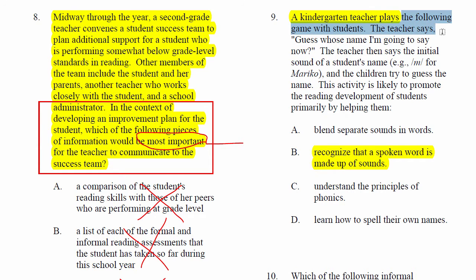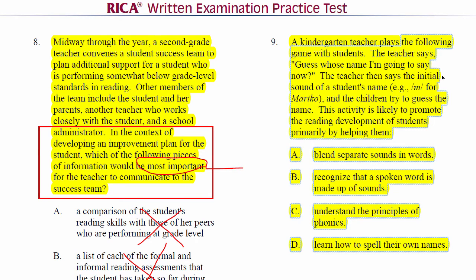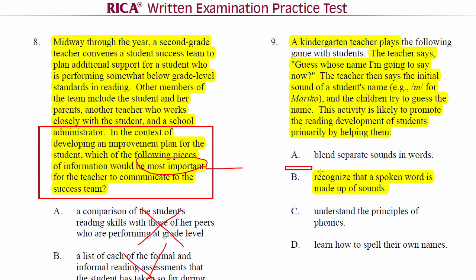A kindergarten teacher plays the following game: the teacher says 'Guess whose name I'm going to say now,' then says the initial sound of a student's name — for example, M for Mariko — and the children try to guess the name. This activity is likely to promote reading development primarily by helping students recognize that a spoken word is made up of sounds — answer B. The teacher is doing initial sounds using something familiar, like a student's name.